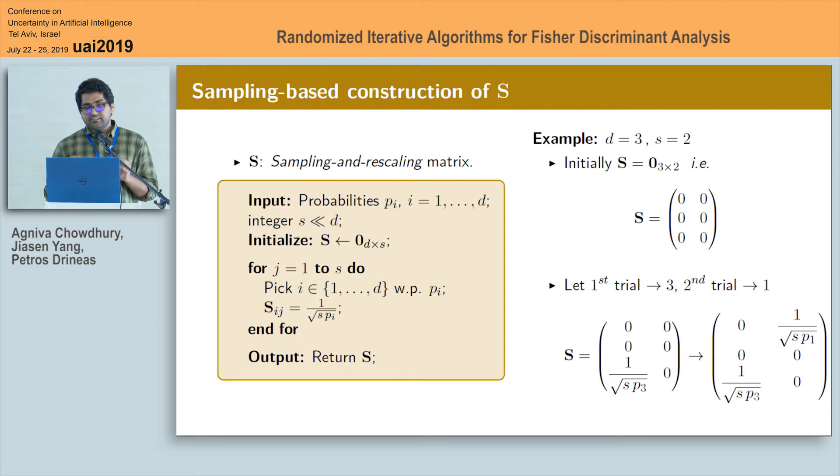Now if the jth trial results in i-th number then we replace the i-jth element of the sketching matrix S with a new quantity which is 1 divided by square root of small s times p_i and this process continues until we reach the desired sample size which is small s.